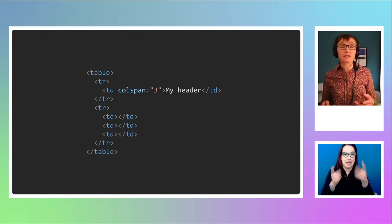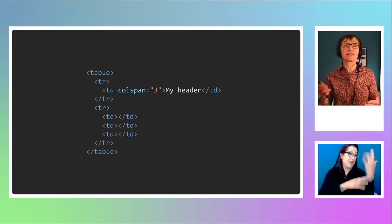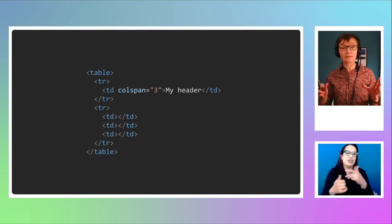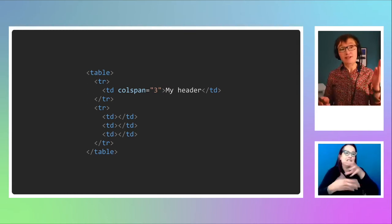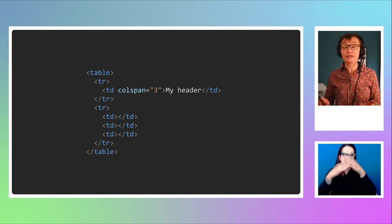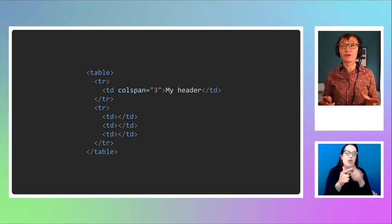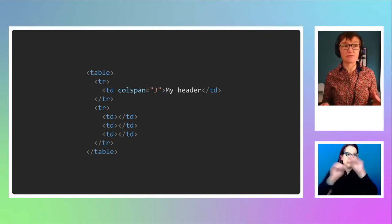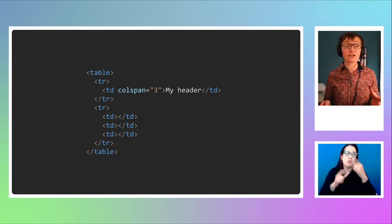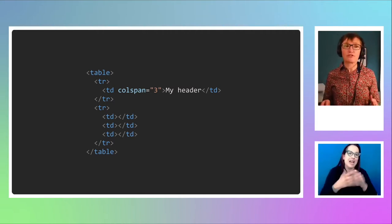Even worse with tables for layout: if anyone was building sites back then, you remember how we nested tables into table cells. We'd basically take a picture of a website, slice it up, and jam little bits of it into different table cells — fragmenting all of the content all over the table. That made it terrible for accessibility because the content was jammed into table cells. It was a bit like doing web design in Excel.